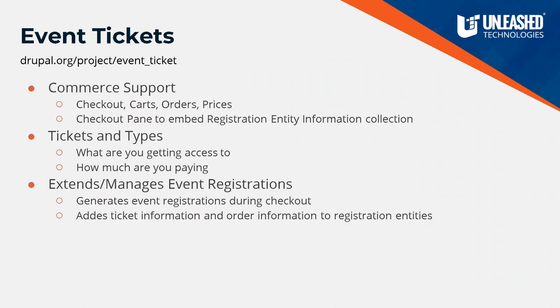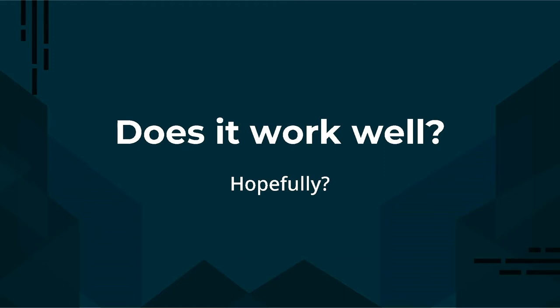The second half — ticketing — handles checkouts, checkout carts, pricing, and the representation of tickets. You don't actually need all of commerce to be enabled to use this, it just requires pricing. It's about how much you pay and what kind of registration you get. The ticket represents what you're registering for. The event tickets module is built on top of the event registration module, so a ticket type has an associated registration type — if you pay for a certain tier, you get the specified registration type along with that. As part of this, we'd be generating the registration entities with the associated event.